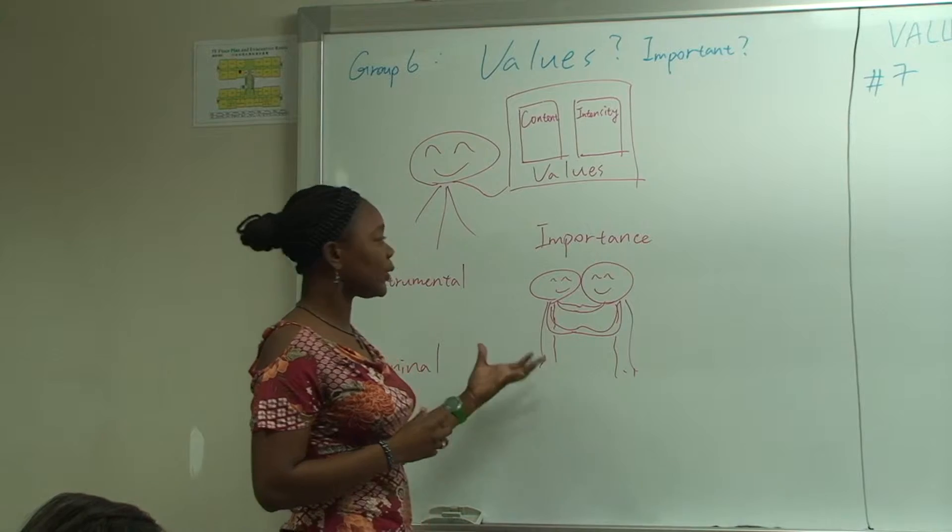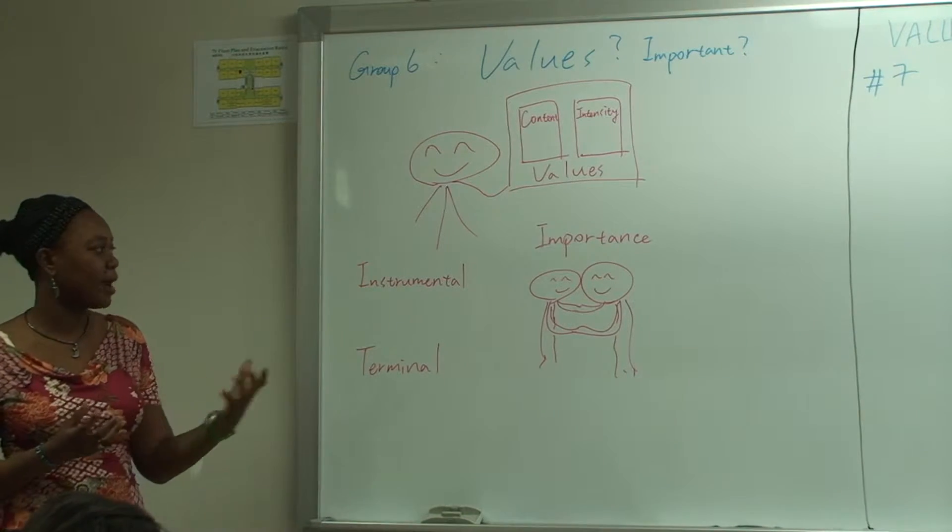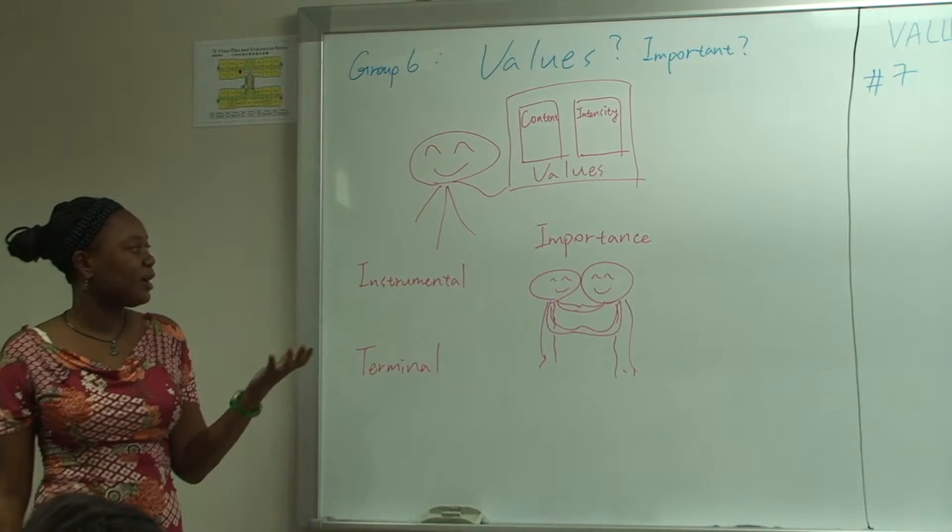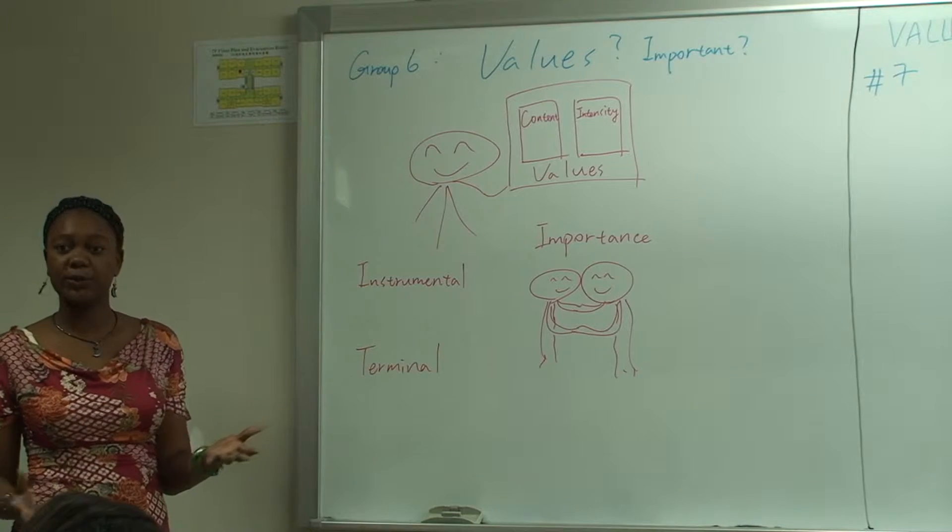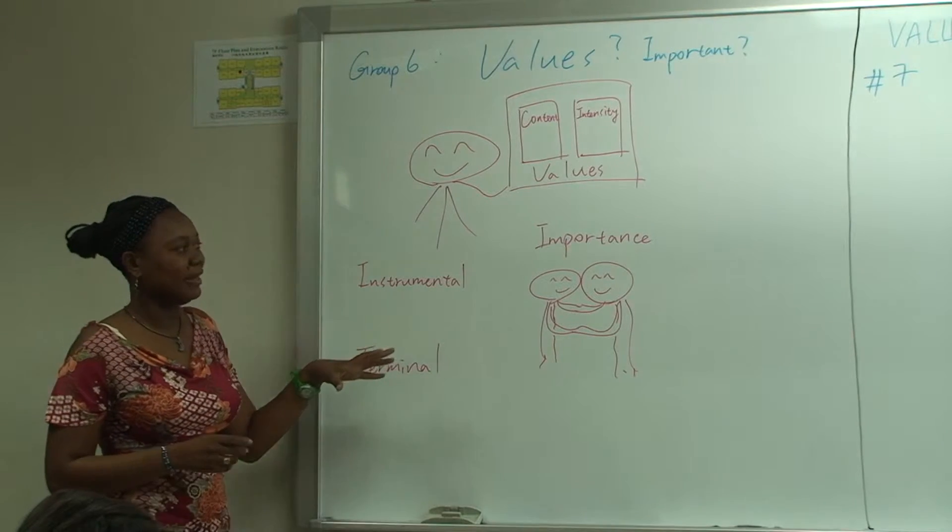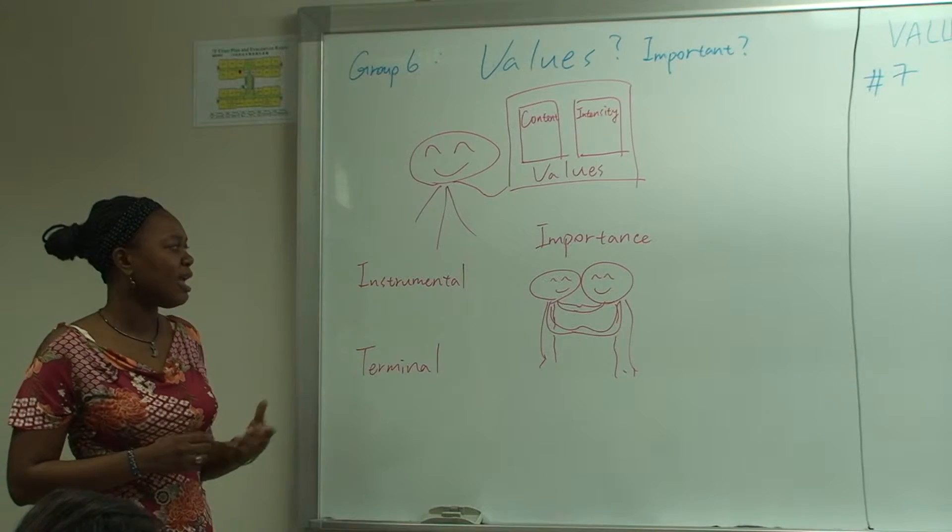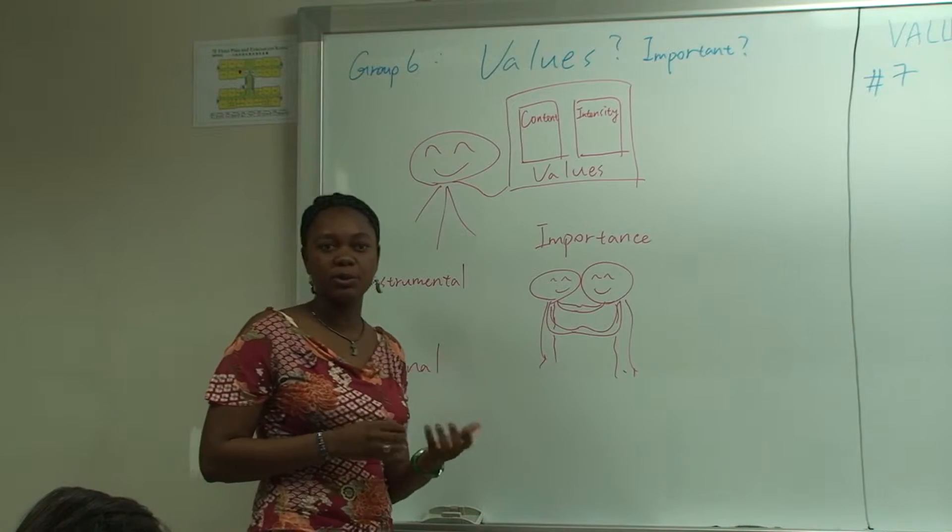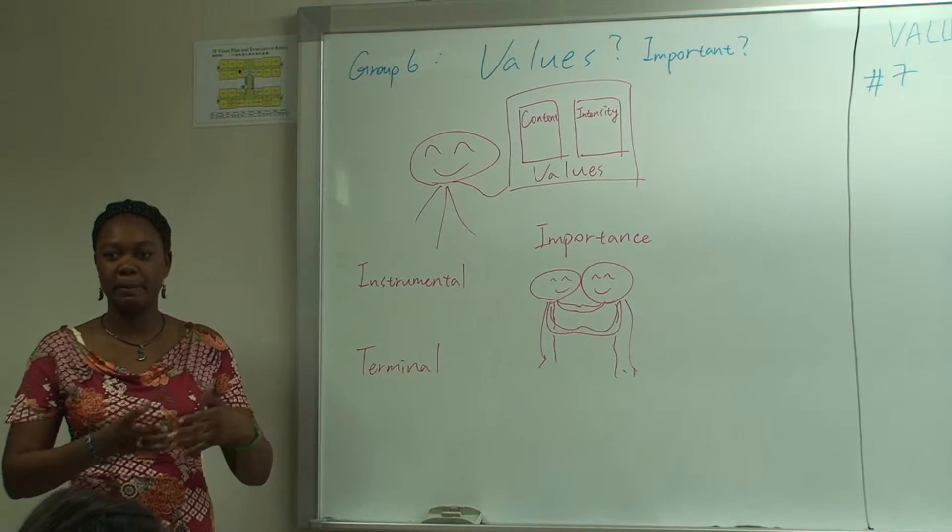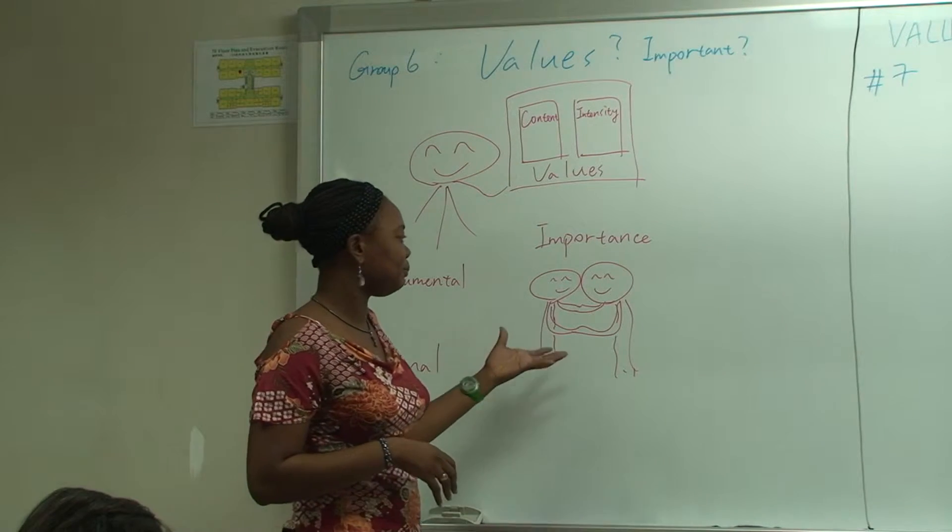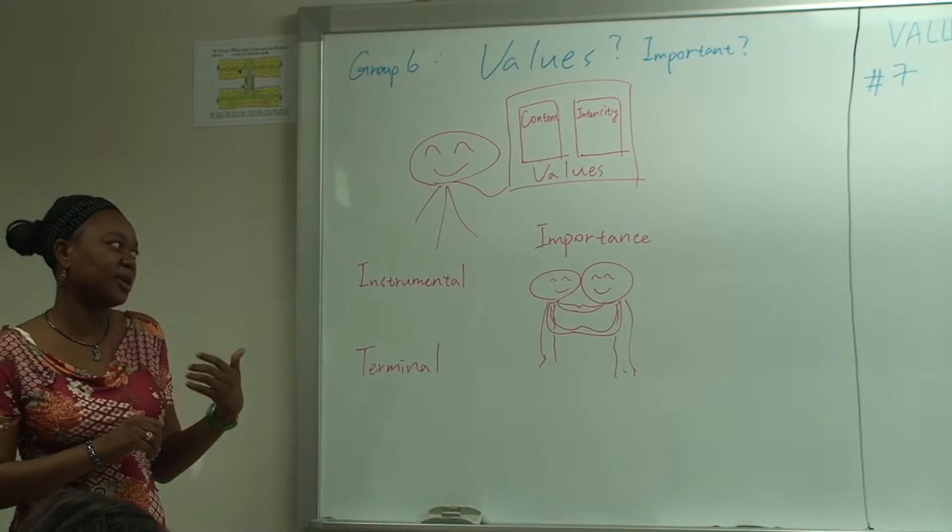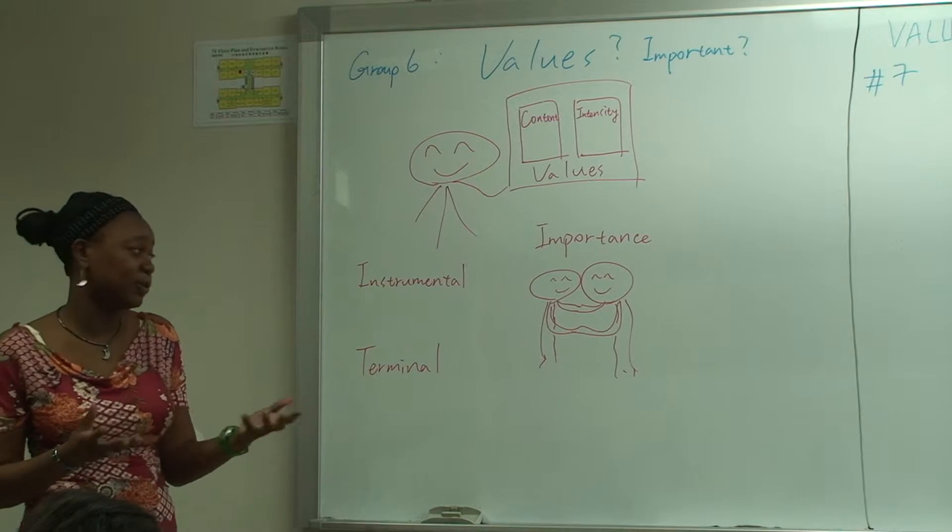And value can influence our perception about people. For example, a person may have a value that discrimination is something wrong. So if this person enters the organization and sees that the manager is treating people badly because of his religious conviction or something else...